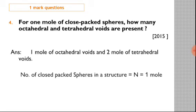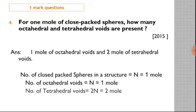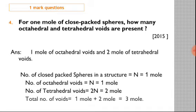If n equals 1 mole, the answer will be 1 mole of octahedral voids and 2 mole of tetrahedral voids. If the number of close-packed spheres is n equals 1 mole, the number of octahedral voids will be the same, 1 mole, and the number of tetrahedral voids is twice that, 2 mole. If they ask for the total number of voids, it will be 1 plus 2 equals 3 mole.